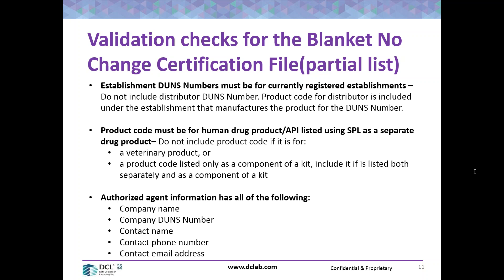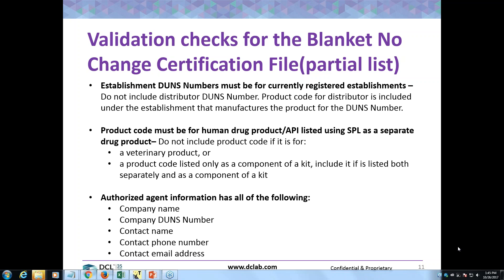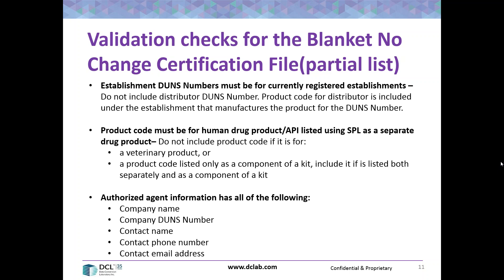The next question: For a virtual company who is not a registered drug establishment and who labels and lists a drug under their own NDC — would they be able to use the blanket no change, or must they update their listing individually? It's the responsibility of the manufacturer of that drug to list the distributor's labeler code — either by submitting an updated label or by including it in a blanket no change. But as the authorized agent, the distributor can include it in the blanket no change certification file.